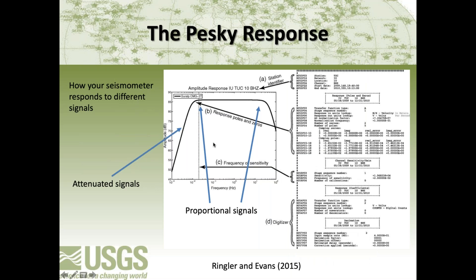The response is something we need to deal with. Our seismometer outputs a voltage proportional to ground motion, but only across a certain frequency band called the pass band. As signals get lower and lower in frequency, the seismometer attenuates those signals and you need to correct for that attenuation. The same thing happens at high frequencies. The middle section is where the sensor is proportional to ground motion, and it attenuates signals at both low and high frequencies.